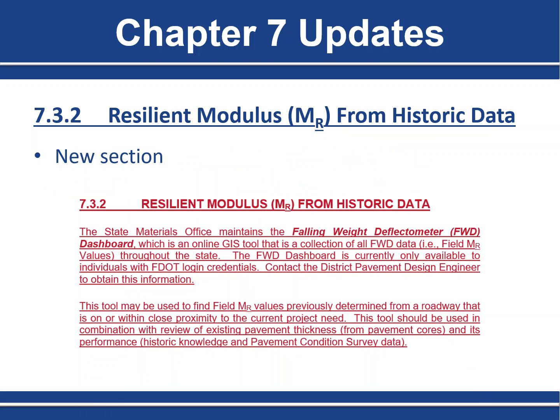We've introduced a new method for obtaining existing resilient modulus information. The State Materials Office has developed a GIS tool called the FWD Dashboard, which contains historic falling weight deflectometer test data. When it's not feasible to get field resilient modulus through field testing, this is the next best option — you can use it to find field resilient modulus values previously determined on nearby roads, used in combination with a review of existing pavement thickness and performance. Note that this tool is not yet available to people external to FDOT; those without an FDOT login will need to coordinate with their district pavement design engineer.